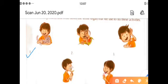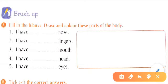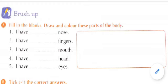Let's start with Exercise A: Fill in the blanks. Draw and color these parts of the body. You have to fill the blanks, draw a picture, and color that picture. Let's start with number one: 'I have ___ nose.' How many noses do you have? Yes, one. So you have to write 'one' here, draw a picture of a nose, and color the picture. Similarly, complete the rest of the portion by yourself.